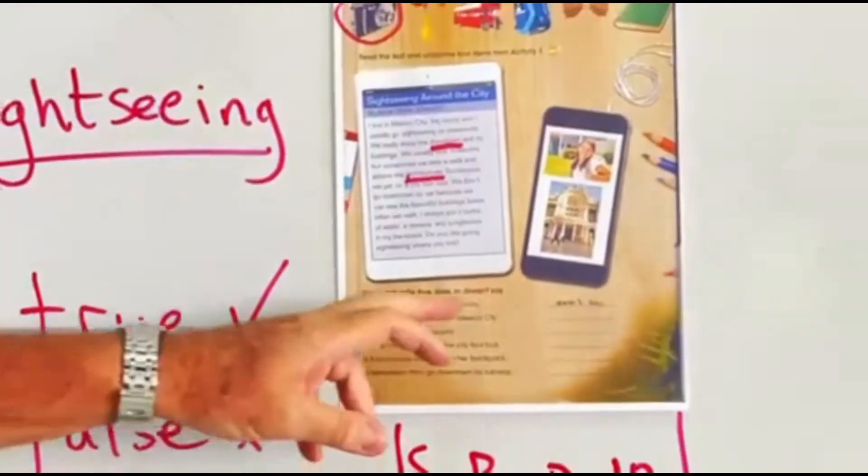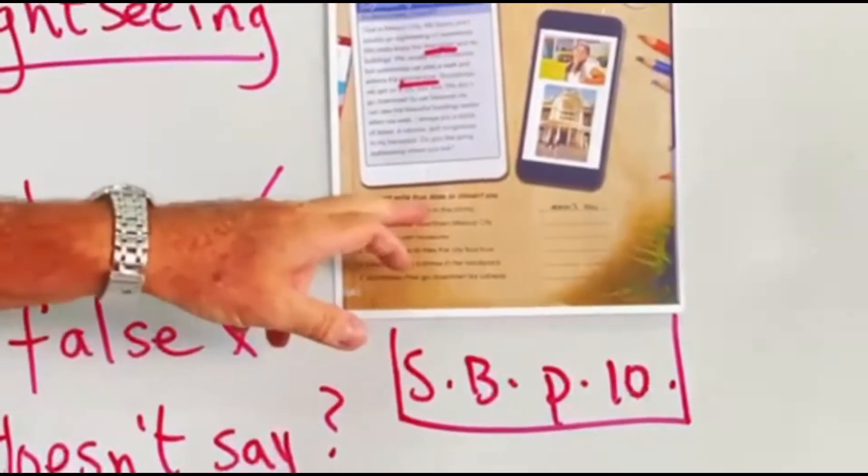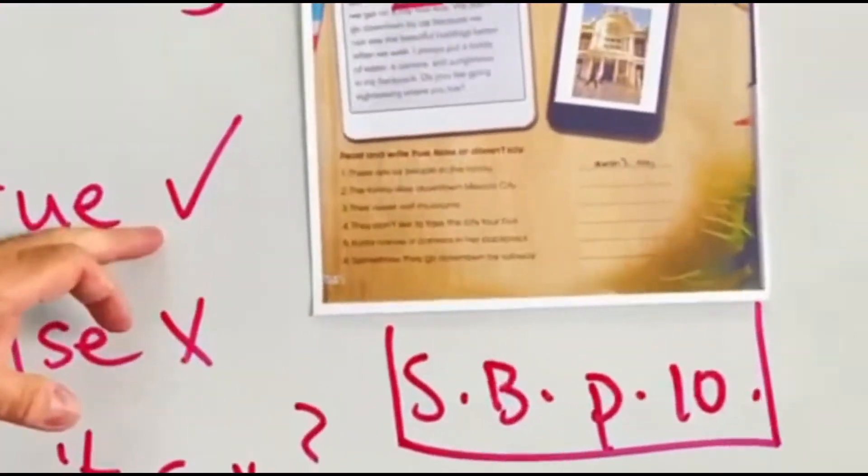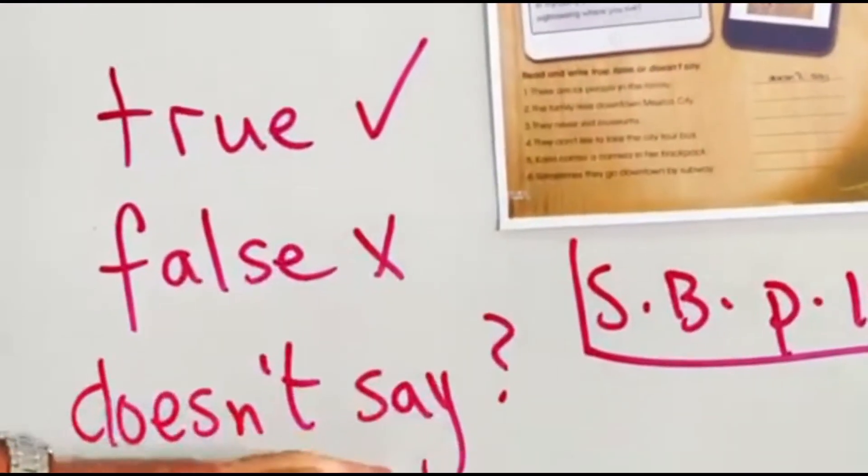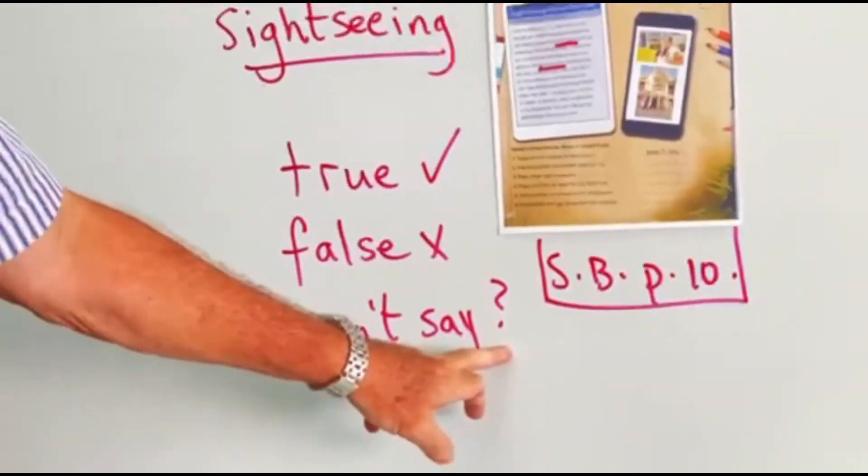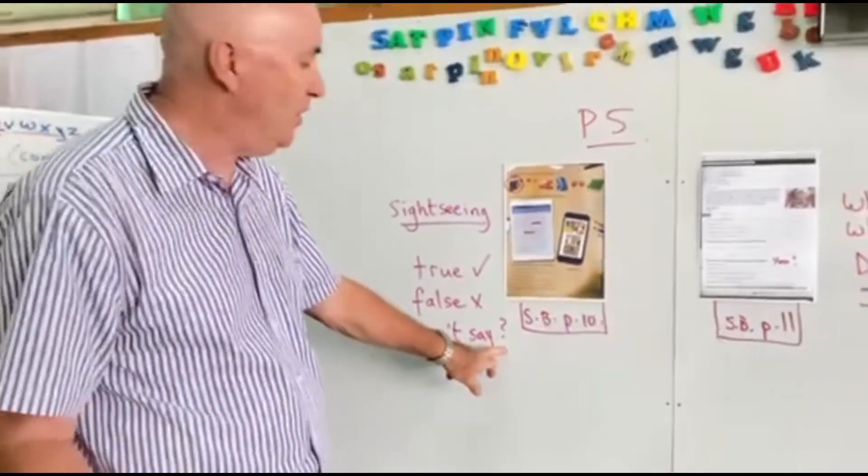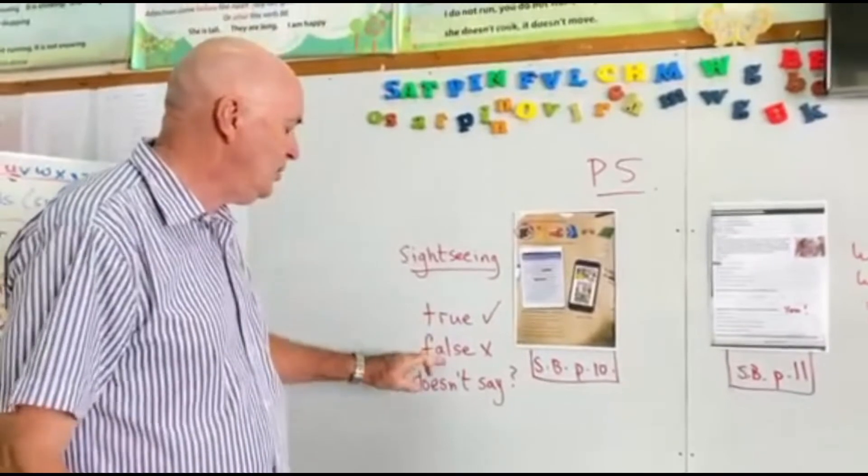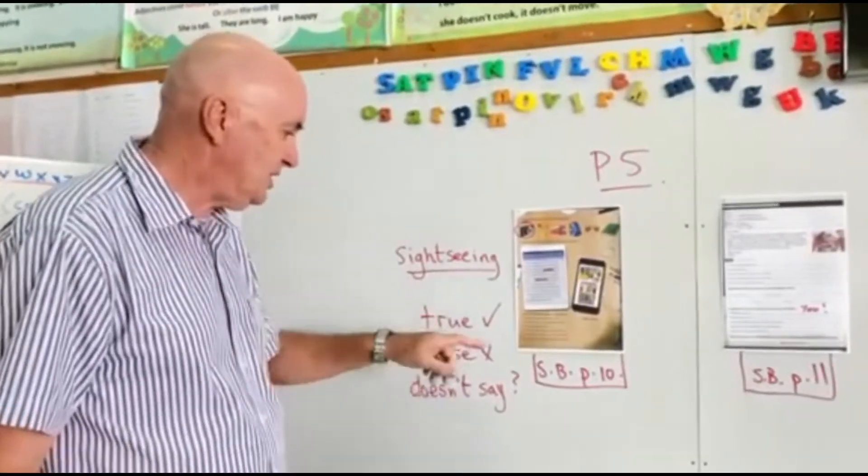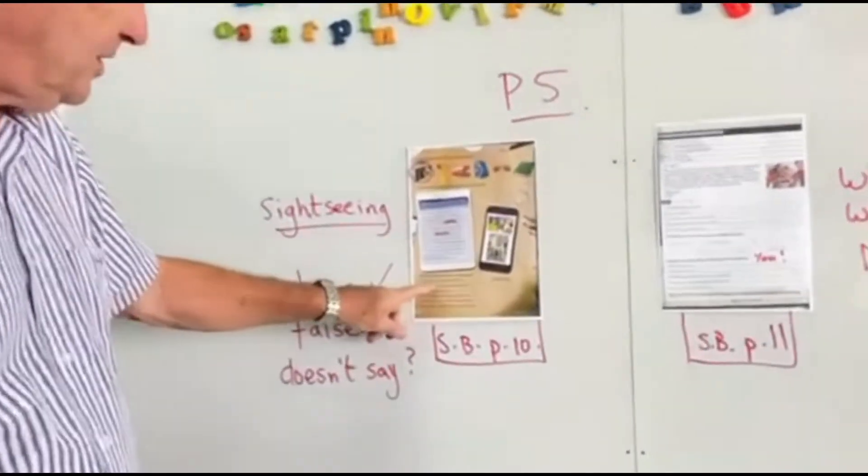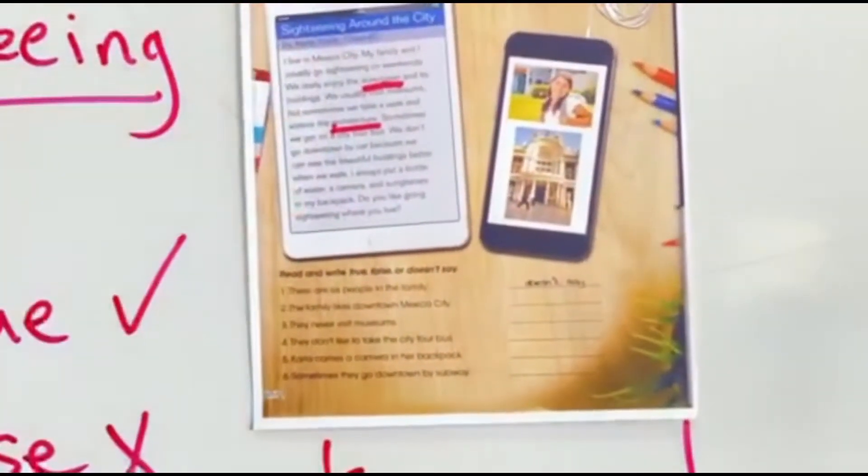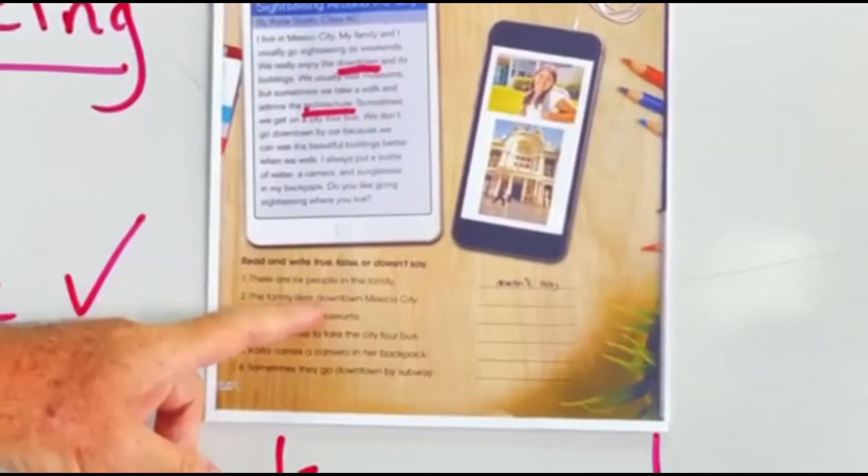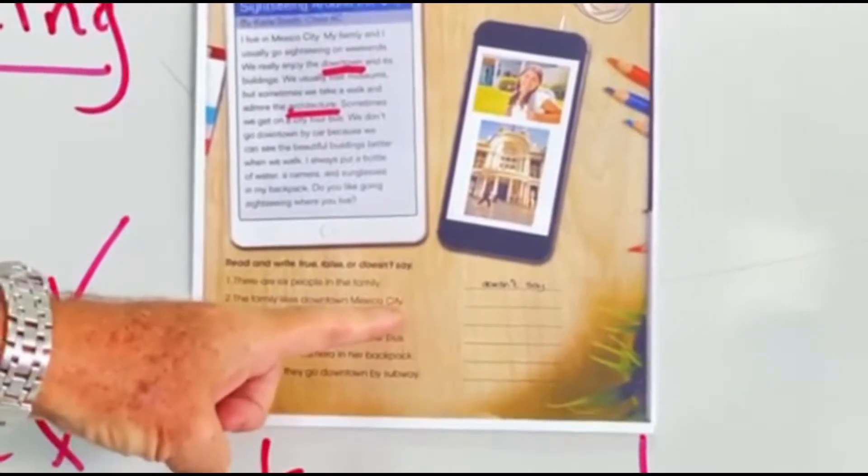And then three answers: true means yes, false no, but doesn't say means we don't know. She doesn't say, she doesn't tell us, so we don't know the answer. So yes true, no false, or doesn't say. First one, there are six people in the family. We don't know, she doesn't say how many in the family, so doesn't say we don't know. The family likes downtown Mexico City.